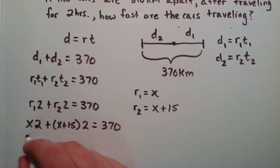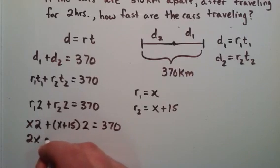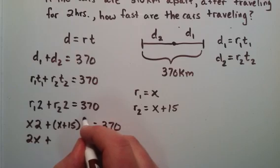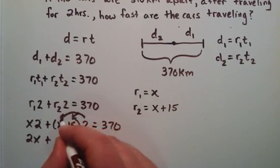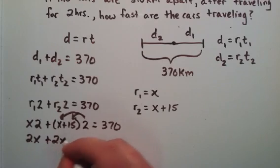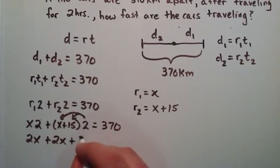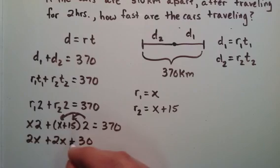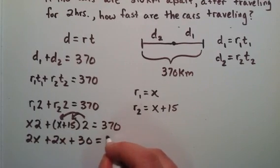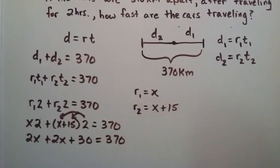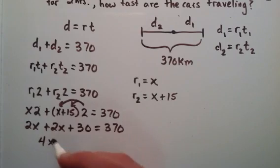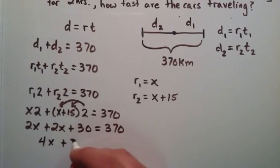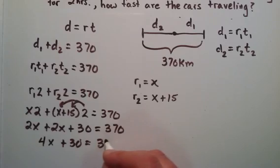x times 2 we can write as 2x. Then we're going to distribute this 2 into each term. 2 times x is 2x, 2 times 15 equals 30, and that equals 370. Now we're adding the x's together. 2x plus 2 more x's is a total of 4x plus 30 equals 370.